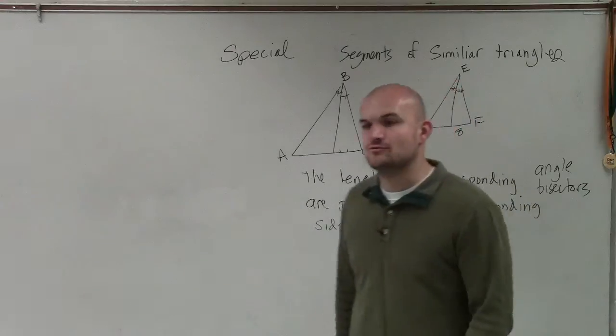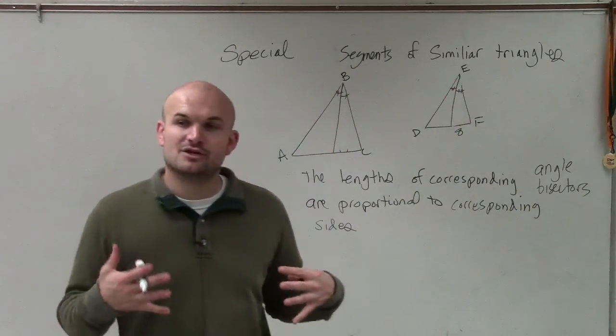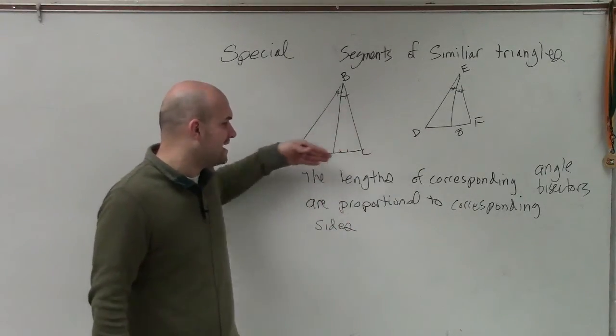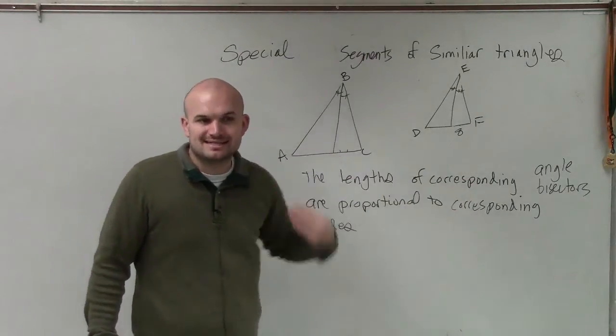I would definitely write in the new picture, all right? But write in the new picture and then write in angle bisectors. But again, what it's saying is the lengths of corresponding angle bisectors are proportional to the lengths of the corresponding sides.